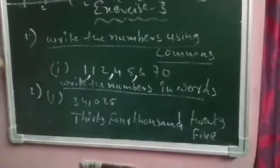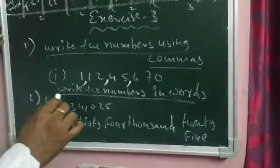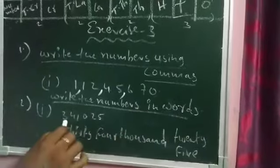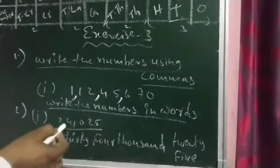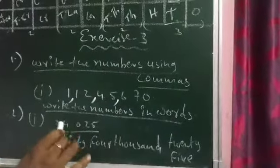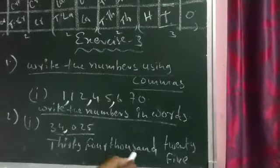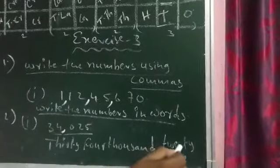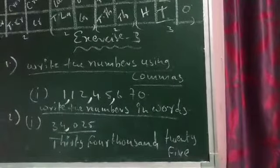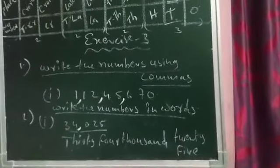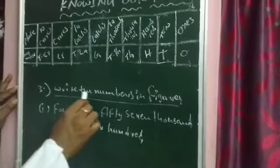The remaining three sums you use commas in the same way. Now the second question says: write the numbers in words. The number is already given and you want to write it in words — for example, thirty-four thousand and twenty-five. Complete the remaining three questions in the same way. Now let us go to the third question: write the number in figures.